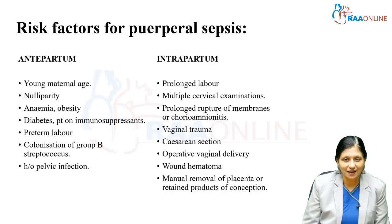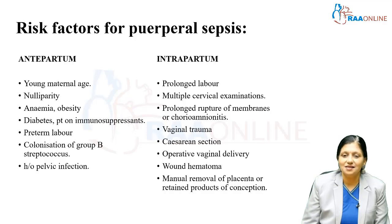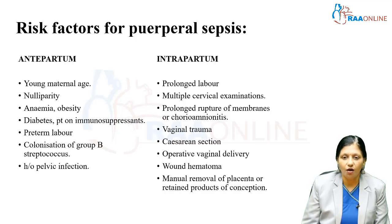The intrapartum factors which increase the likelihood of Puerperal sepsis include prolonged labor, multiple cervical examinations, prolonged rupture of membranes or chorioamnionitis, vaginal trauma, caesarean section, operative vaginal delivery like forceps or ventouse, wound hematoma, and manual removal of placenta or retained products of conception.